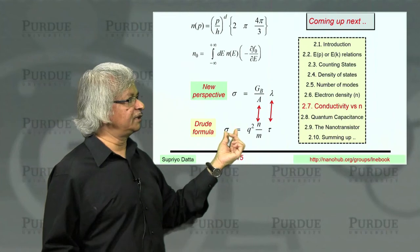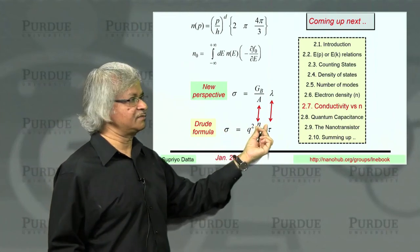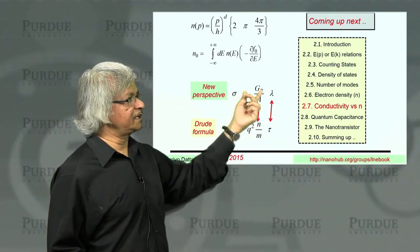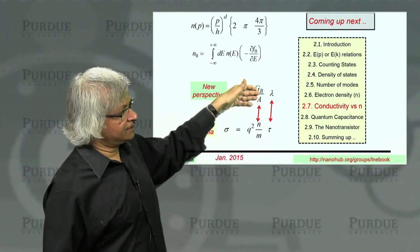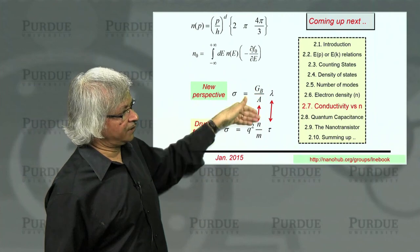And what we really want to do after this to finish up this discussion is connect this new perspective to the old perspective of the Drude formula. You see, the Drude formula had conductivity expressed in terms of electron density, whereas the new perspective, we have the ballistic conductance.